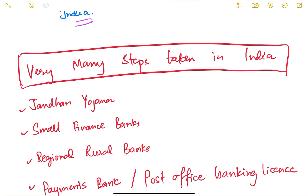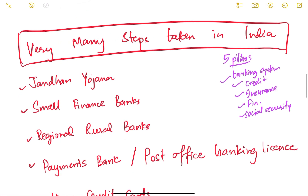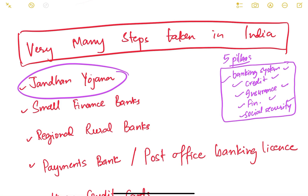RBI took many steps after the Khan Committee report, and over time many schemes have been launched for increasing financial inclusion in India. In this video we'll just look at the list of steps taken by the Government of India and the Reserve Bank of India towards financial inclusion. These steps relate to the five pillars of financial inclusion: banking access, credit, insurance, financial literacy, and social security.